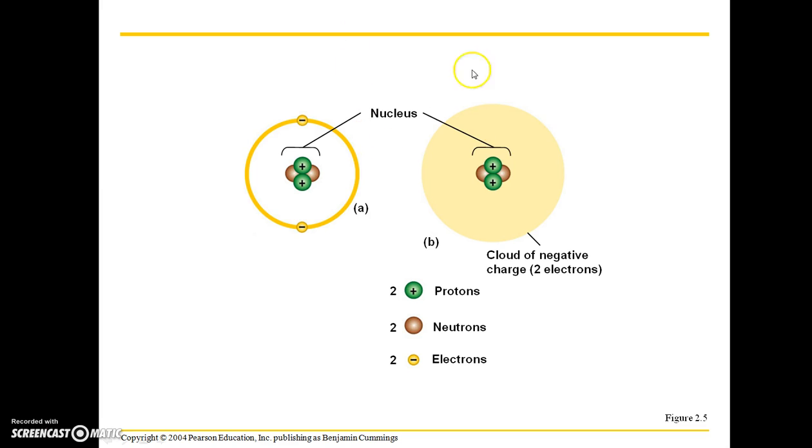Here we have a depiction of some atoms. We have, in this case, two protons, two neutrons, and then two electrons. And again, these symbols just show that the protons are positively charged. Neutrons don't have a charge. They're just beige, neutral. And electrons are negatively charged.